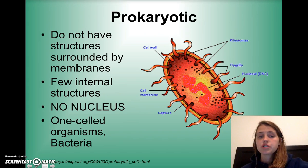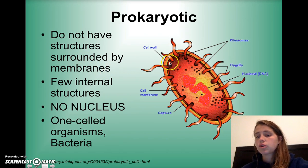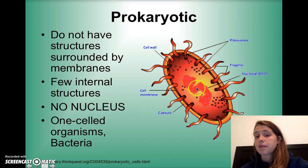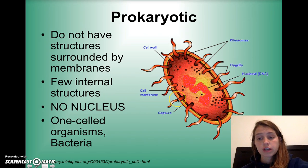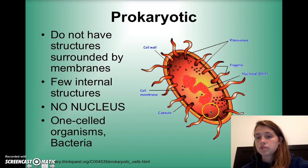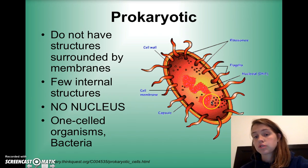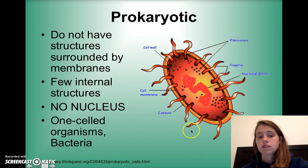So prokaryotic, just as a review, does not have any structures bound by membranes — no little sacs, no little organs that help the cell survive. There are very few internal structures, definitely no nucleus or brain of the cell. And these are always single-celled, unicellular organisms.